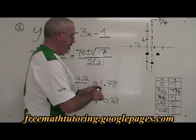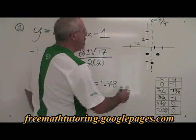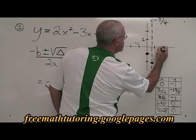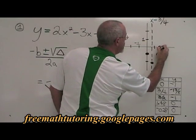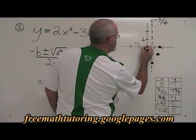And let's graph these. 1.78, 0 is about here, and negative 0.28, 0 is about here.